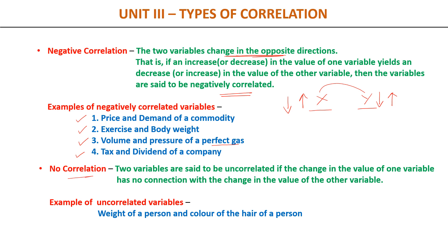The third type is no correlation, which means a change in the value of one variable does not cause any change in the value of the other variable — the two variables have no connection at all. For example, the weight of a person and the color of that person's hair are totally unrelated. If the value of one variable has no effect on the value of the other, then we say the two variables are uncorrelated.